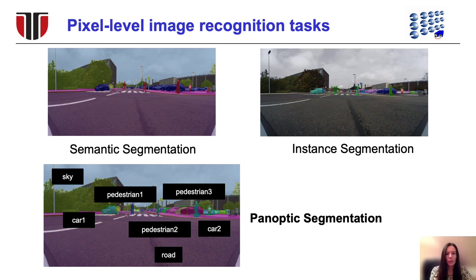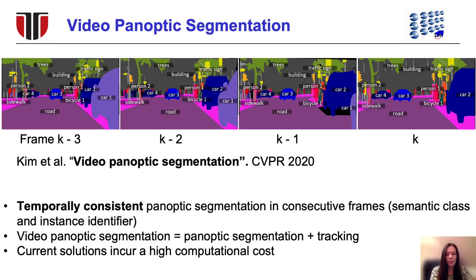Panoptic segmentation unifies semantic and instance segmentation into one output. It provides a semantic class for each pixel in the image and an instance identifier for each object. Video panoptic segmentation is more challenging because it requires temporally consistent inter-frame predictions in terms of semantic class and instance identifiers.